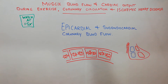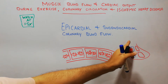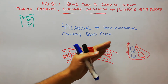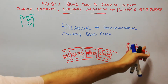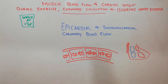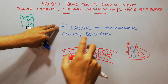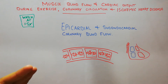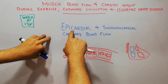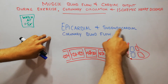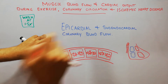The two main large arteries supplying blood to the heart muscles are the right coronary artery and the left coronary artery. These arteries are further divided into small branches to supply the muscles of the heart. The main pattern with which they supply the muscles of the heart is the epicardial and the subendocardial blood flow.